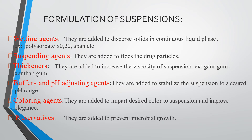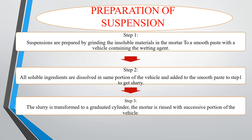The formulation steps for suspension preparation are as follows. First step: grind the insoluble materials in a mortar and pestle to a smooth paste with the vehicle containing the wetting agent. Second step: dissolve all soluble ingredients in a proportion of vehicle and add to the smooth paste to form a slurry.